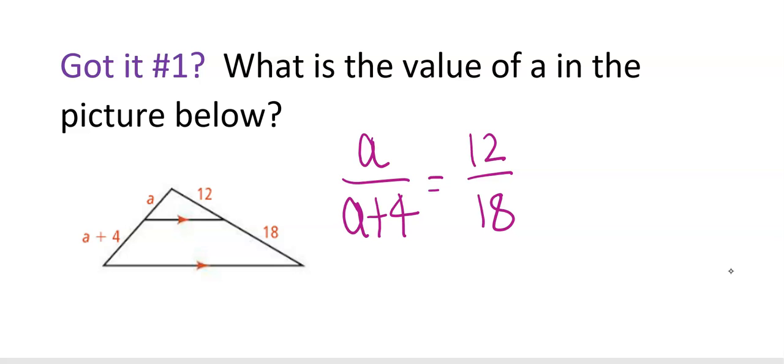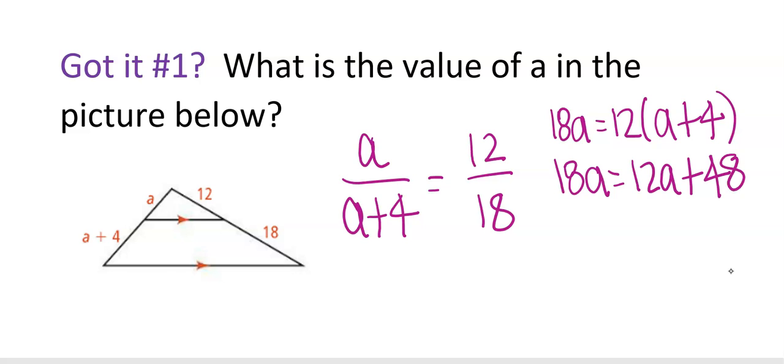So I started at the top this time instead of the bottom. I did A and I compared it to A + 4, and I also did 12 and I compared it to 18. And now we're going to cross multiply just like we did on the other one. 18A equals 12 times the quantity (A + 4), and we'll distribute that 12 on the right to both of those things.